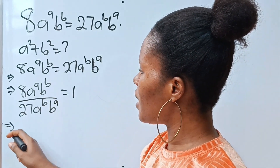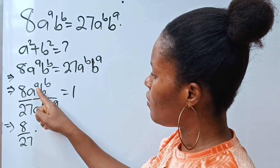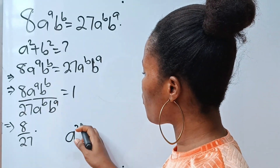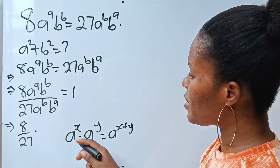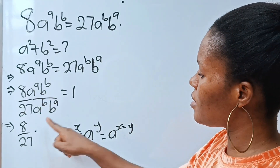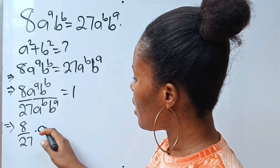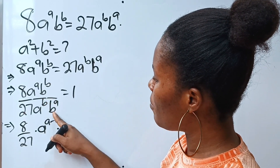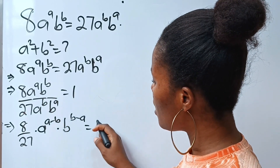This implies that 8 over 27, multiplied by a to the power of a divided by a to the power of b. Using the exponent law, when dividing we subtract the powers and pick one base. So we pick a as our base and subtract the powers to get a minus b. Similarly, b to the power of b divided by b to the power of a gives b to the power of b minus a, and this equals 1.